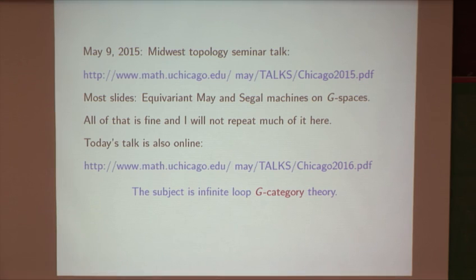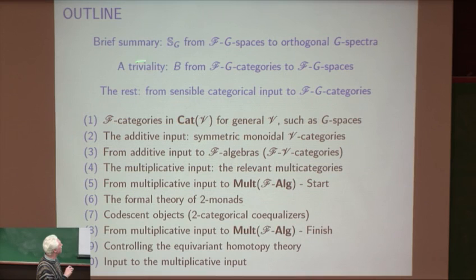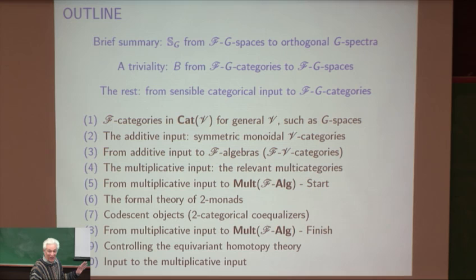So, very briefly—even briefer than I had planned, thanks to Bertrand—here is a summary. This is my notation for the Segal-Shimakawa, Mona, Merling, and Yelica Osorno machine equivariantly. Recall the triviality that B, the classifying space functor, has good properties. The whole rest of the talk is going to be how to go from sensible categorical input to FG-categories, which is just functors from F to the category of G-categories, as Bertrand described.